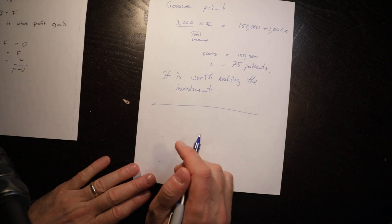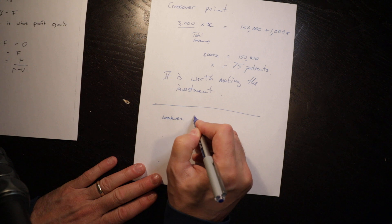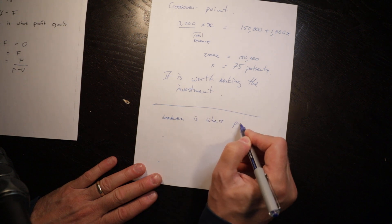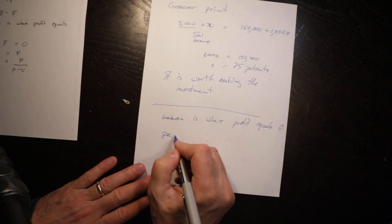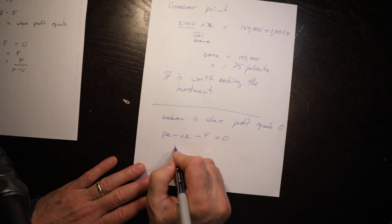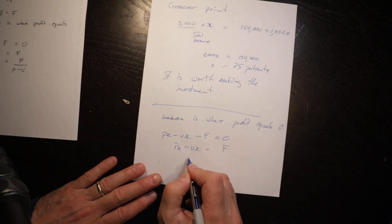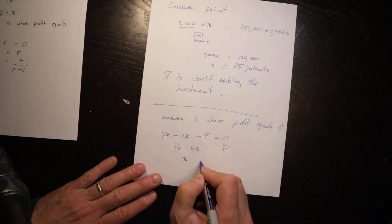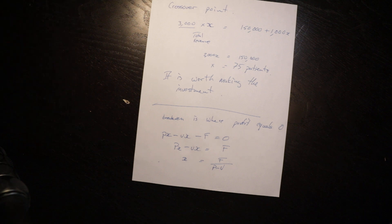Another way of expressing break-even: profit equals zero, so Price × X − Variable Cost × X − Fixed Cost = 0, which gives PX − VX = F, and therefore X = F ÷ (P − V). It's exactly the same thing. That's how you can use crossover analysis for break-evens and also for choosing which technology to adopt.